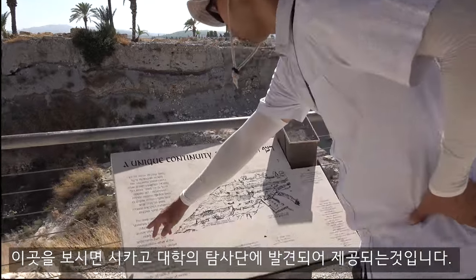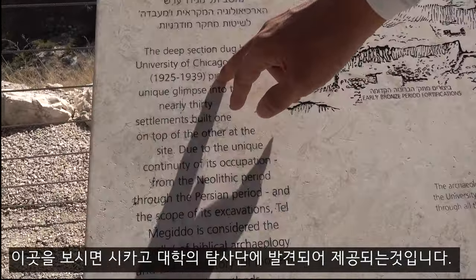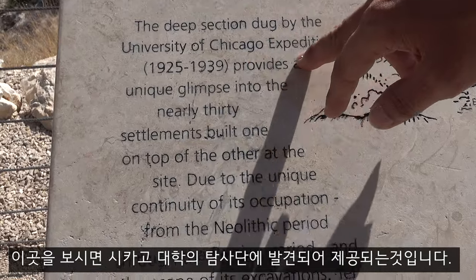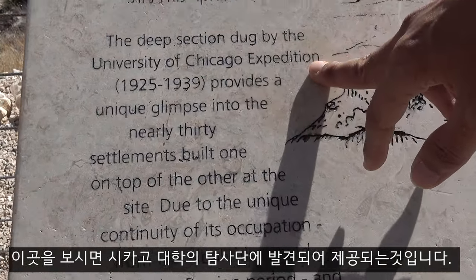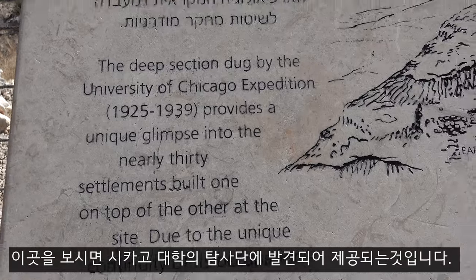Here I can see how the city is located — the city of Megiddo. Here is the Chicago University of Chicago.